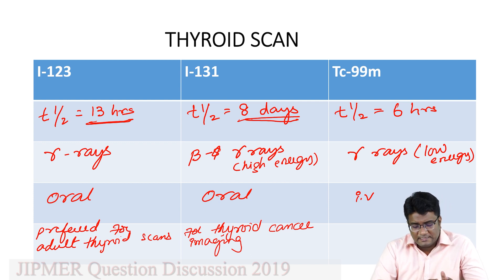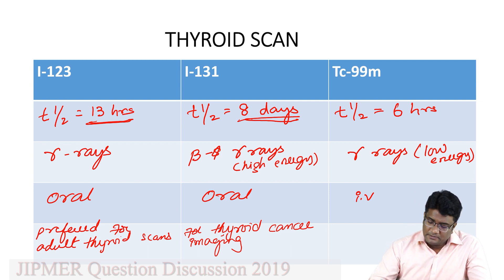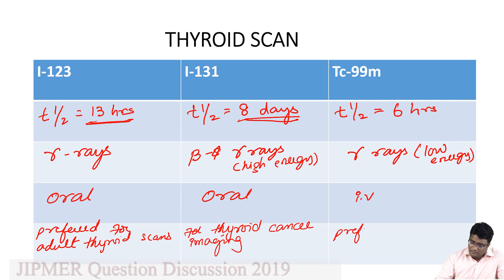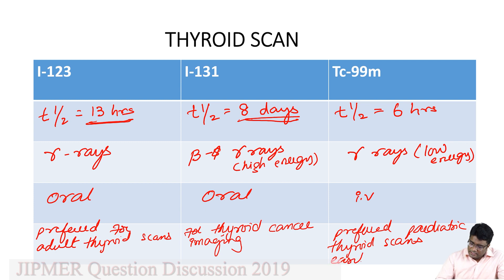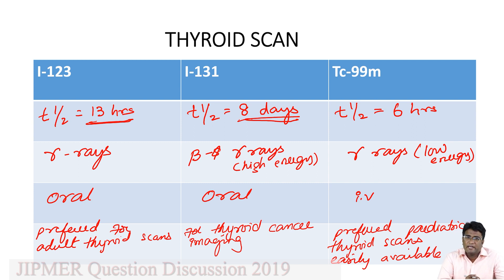Technetium 99m produces the lowest energy gamma rays — much less than iodine 123 or iodine 131 — and that is the reason technetium 99m is preferred for pediatric thyroid imaging. Technetium 99m is also cheaper and more easily available compared to iodine 123. In countries like India where it is difficult to get iodine 123, we generally go for technetium 99m pertechnetate scan to look at the thyroid.